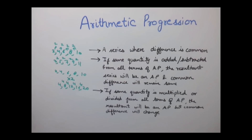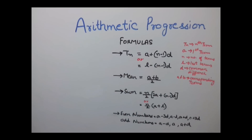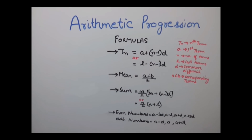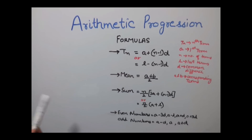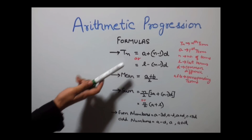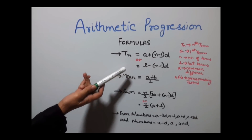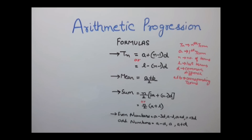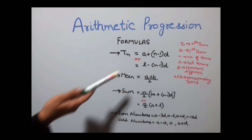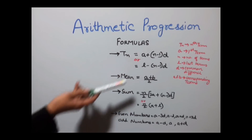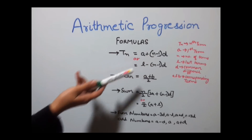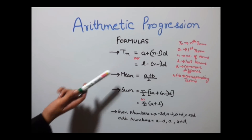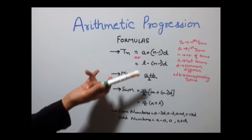Now let's understand some examples. But first, let me tell you the formulas used to solve arithmetic progression. The formula to find any nth term is represented by Tn, where n represents the term we want to find. For example, to find T5 (the fifth term), the formula is A + (N − 1) × D, where A is the first term, N is the total number of terms, and D is the common difference.